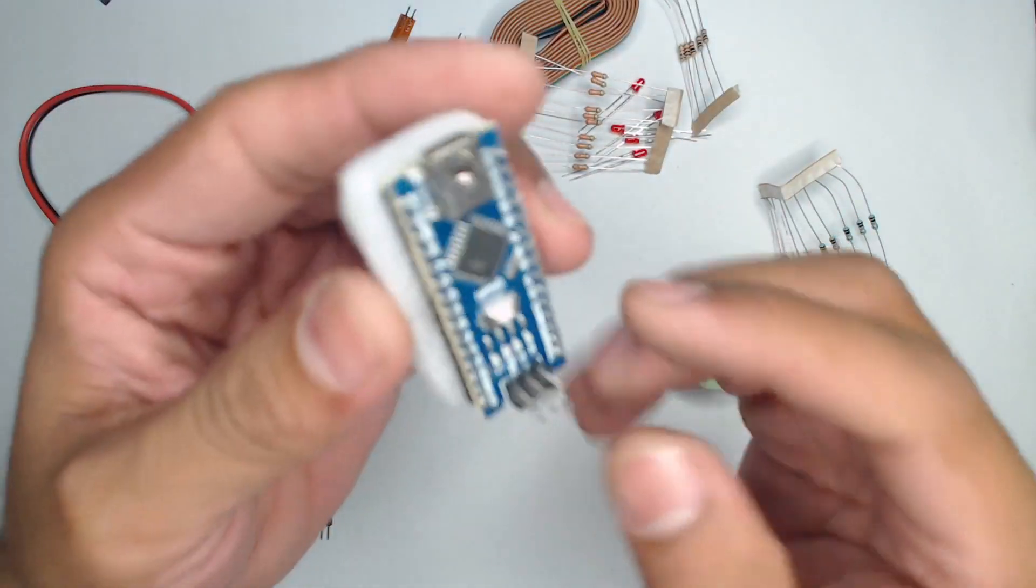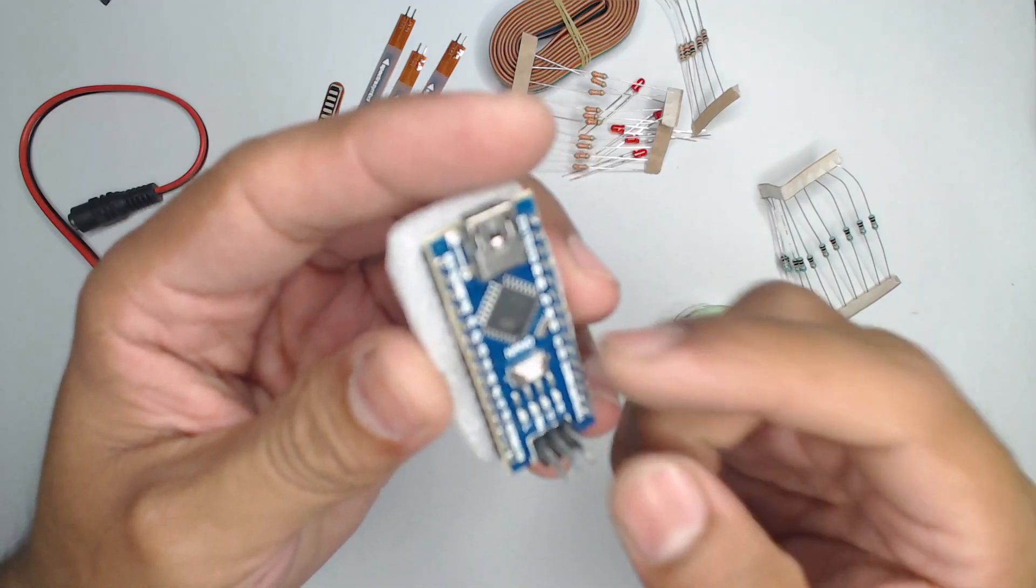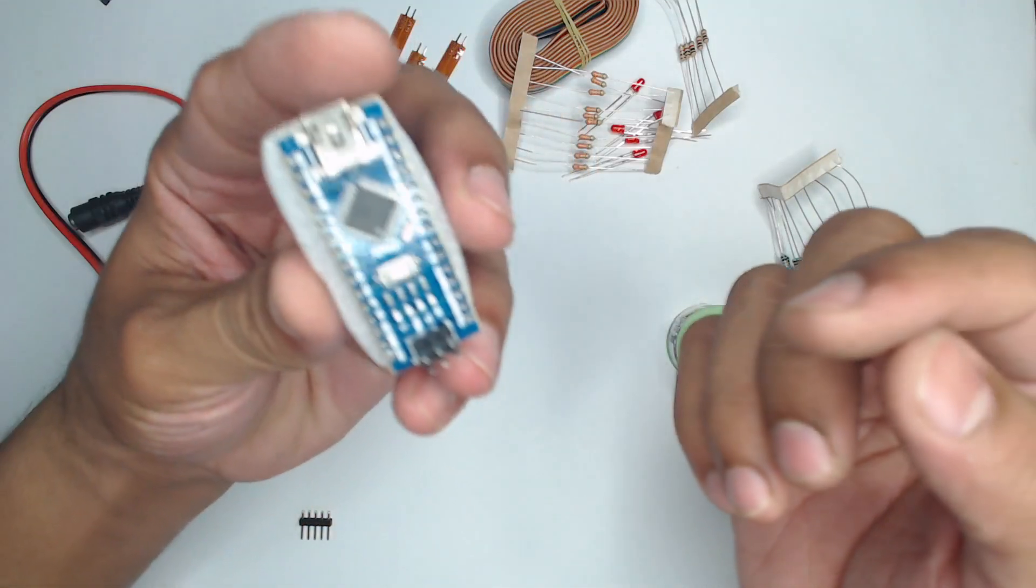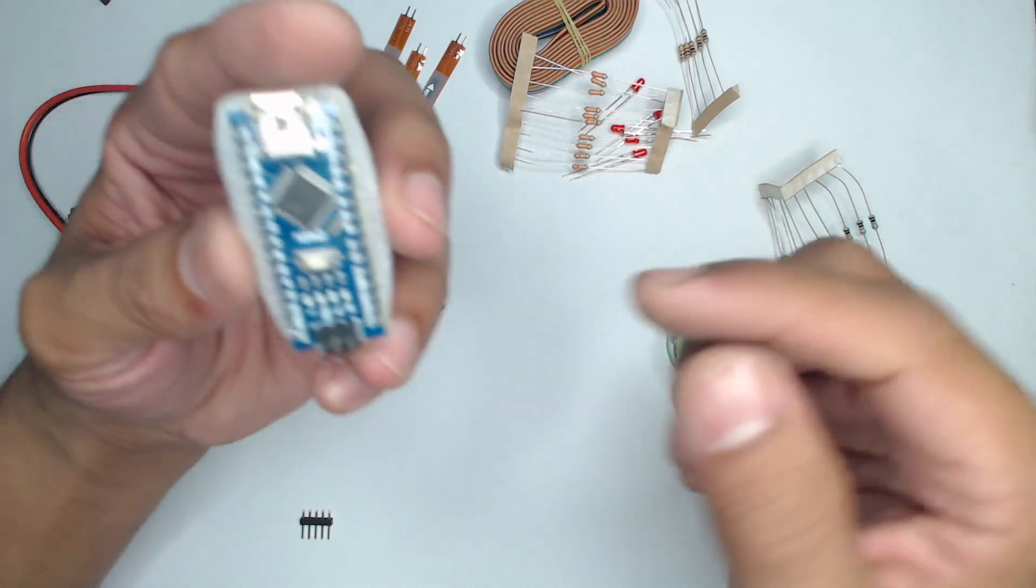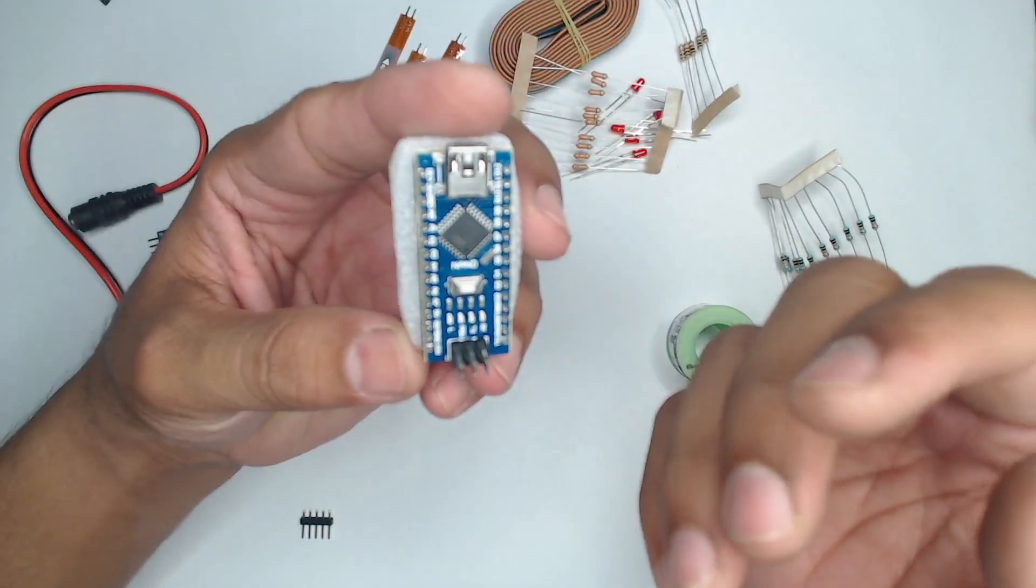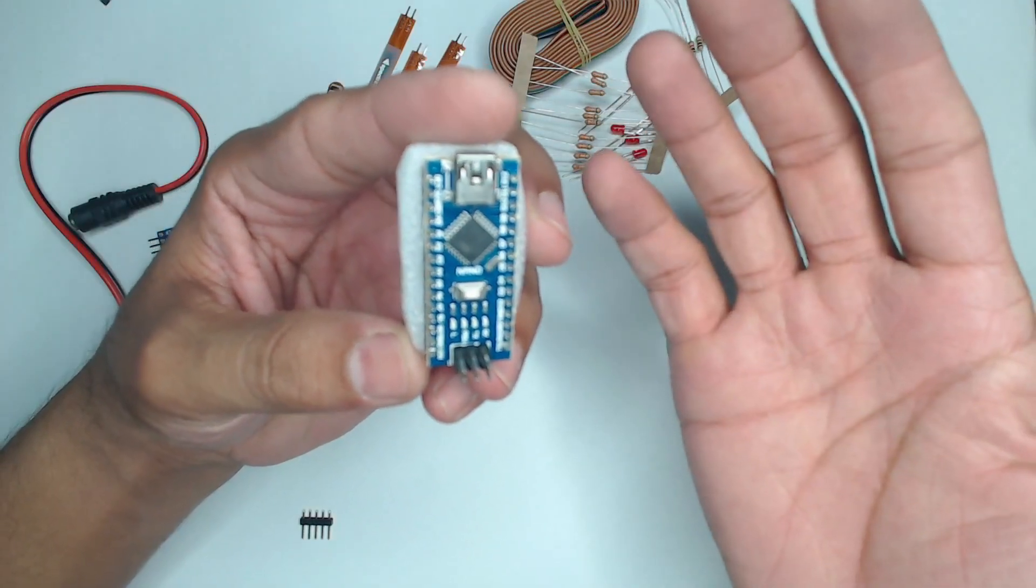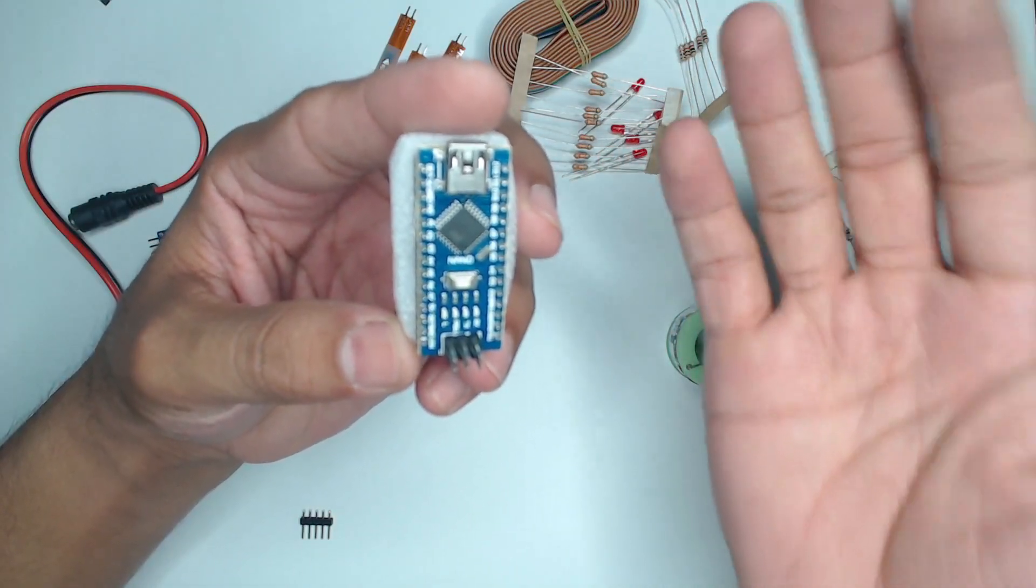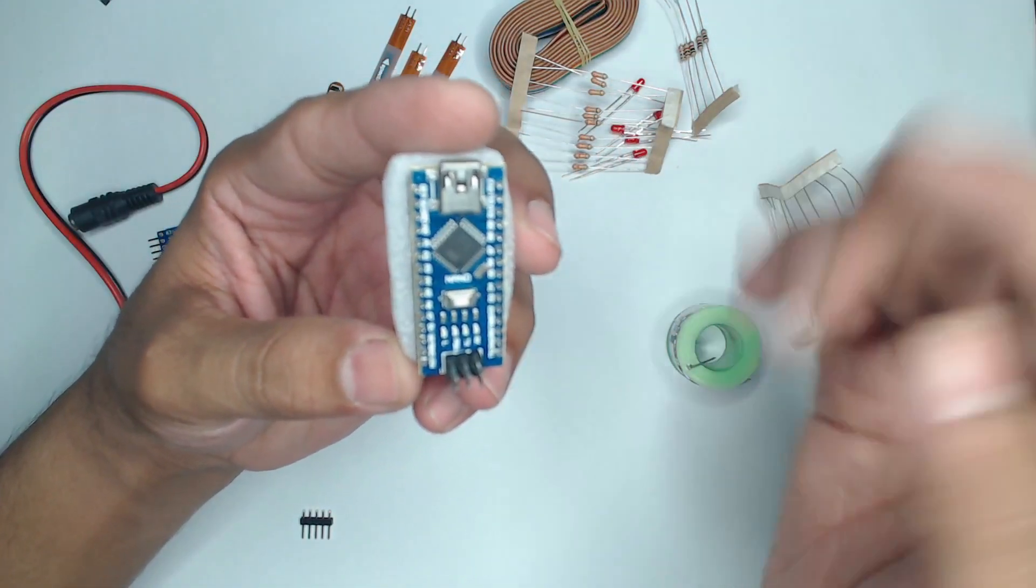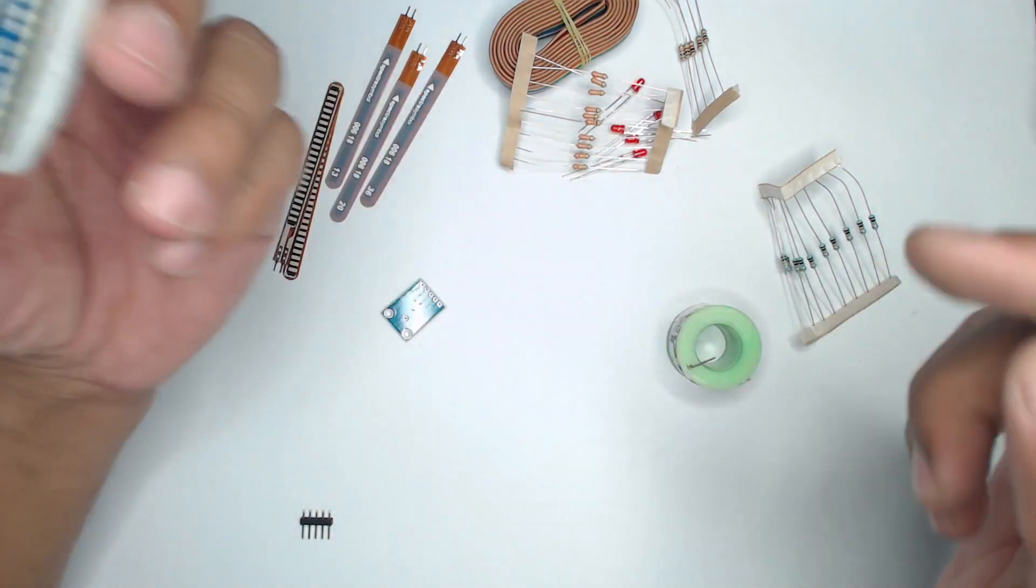As you can see here we have A0 to A7, so currently we're having eight analog pins. The beauty of analog pins on Arduino Nano is eight. If you are going with a normal Arduino then probably we have the range of analog pins to be only six - that is A0 to A5. But on the Arduino Nano we have eight pins.